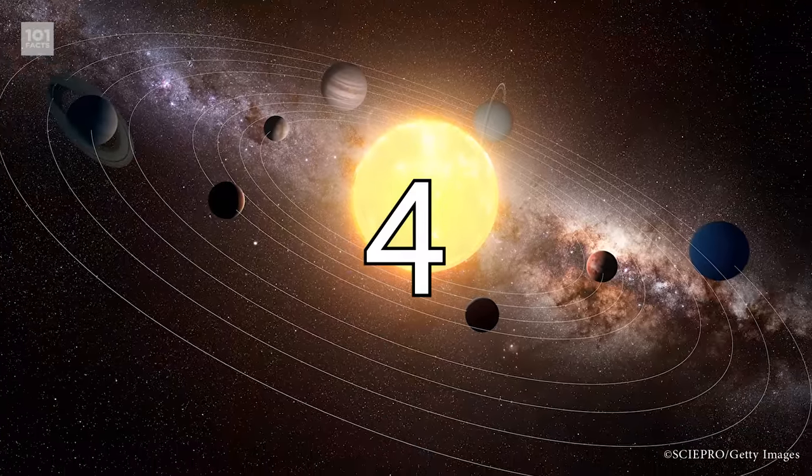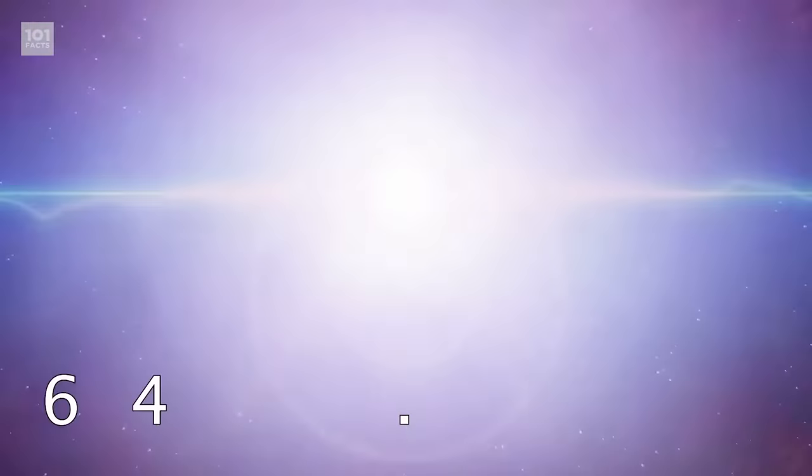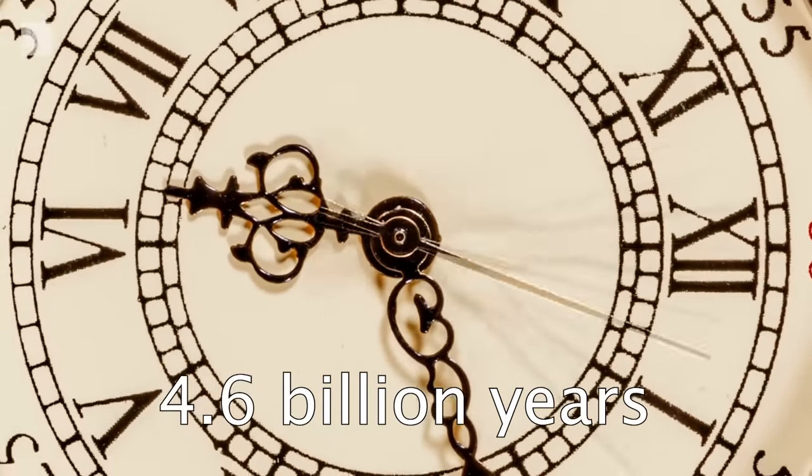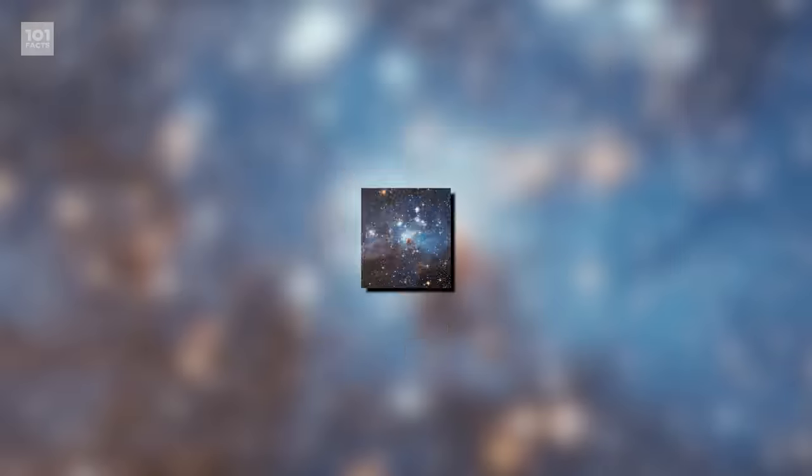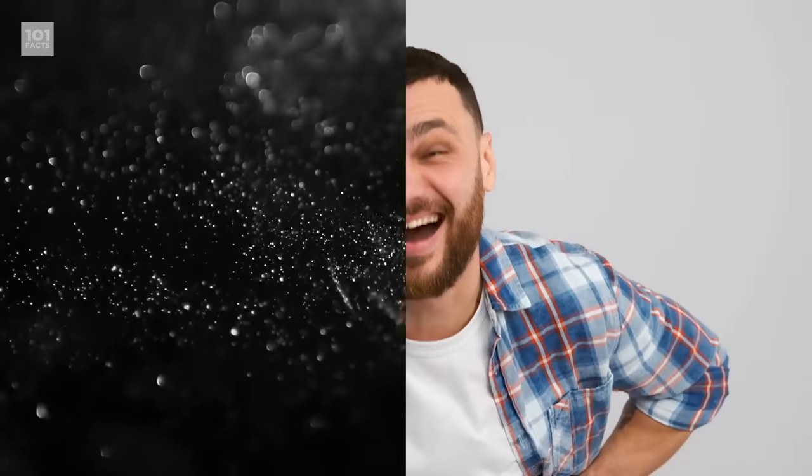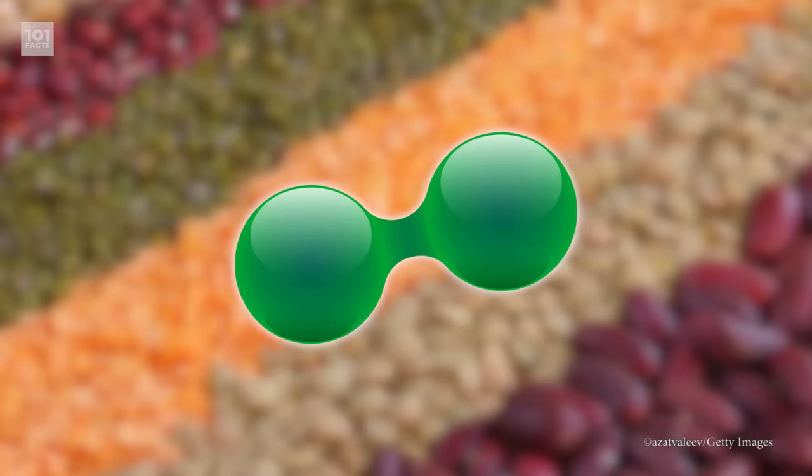The solar system formed around 4.6 billion years ago, when a giant interstellar molecular cloud collapsed. A molecular cloud is basically a big space cloud full of dust and gas. It's mostly hydrogen, or H2.